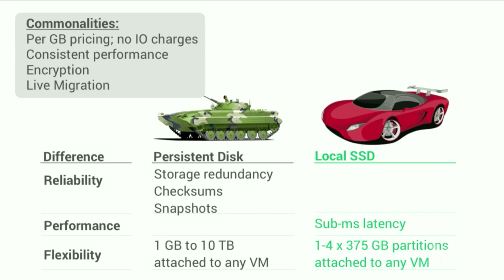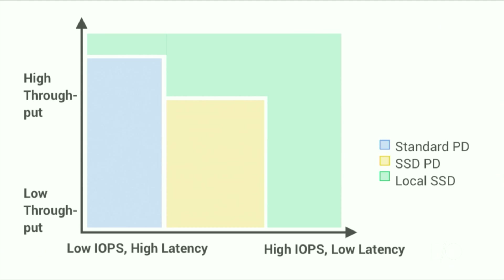For flexibility, note that both PD and local SSD are very flexible. PD volumes are the more flexible in that they can be created in sizes ranging from as small as 1 gigabyte all the way up to 10 terabytes in 1 gigabyte increments, and can be attached and detached from VMs on the fly. Local SSD, by contrast, can be allocated to VMs only at creation time and needs to be allocated in one to four partitions of 375 gigabytes. While this isn't as flexible as PD, local SSD does not require special instance types with pre-specified amounts of SSD. This lets you right-size the VM, CPU, memory, and storage.